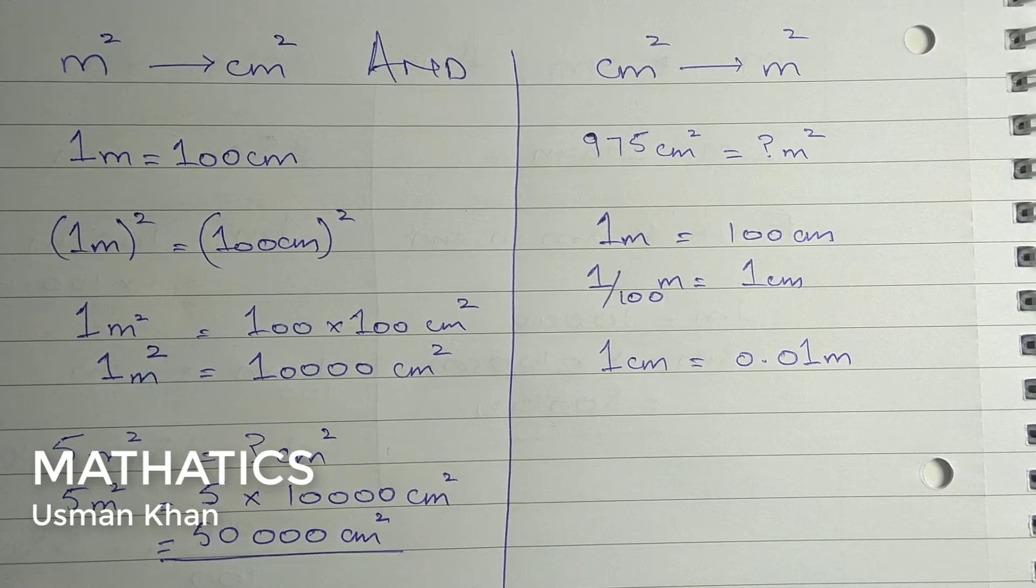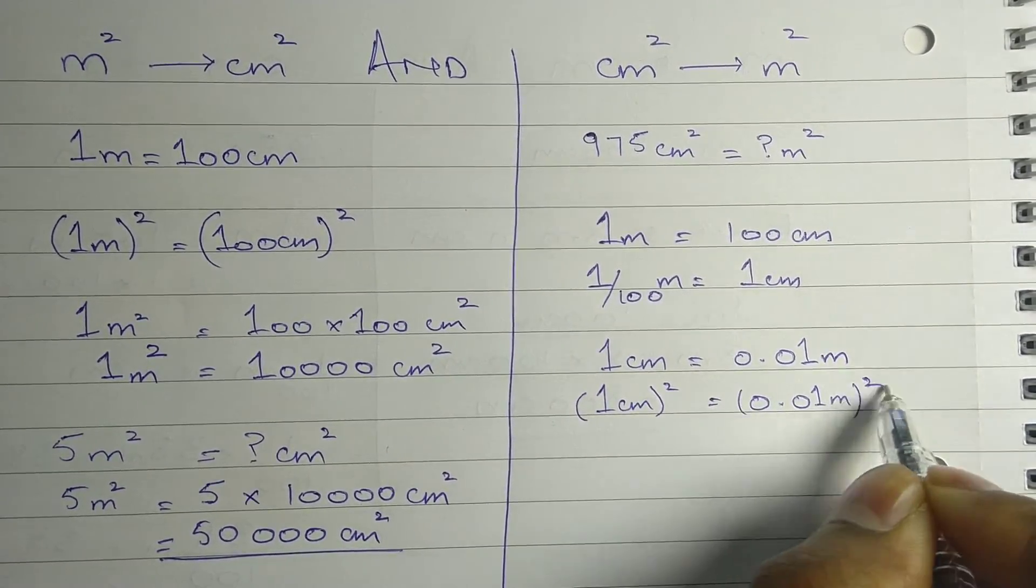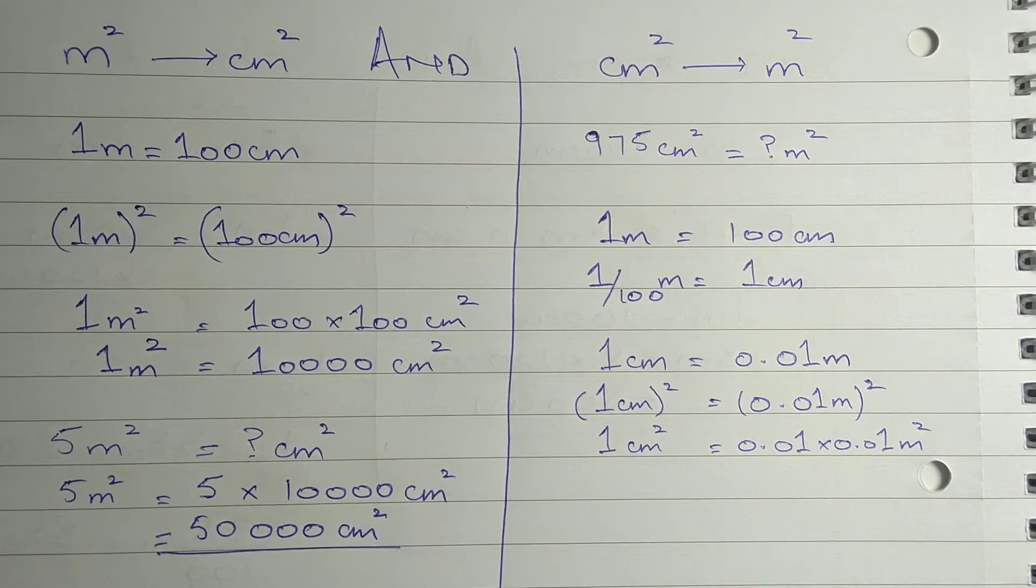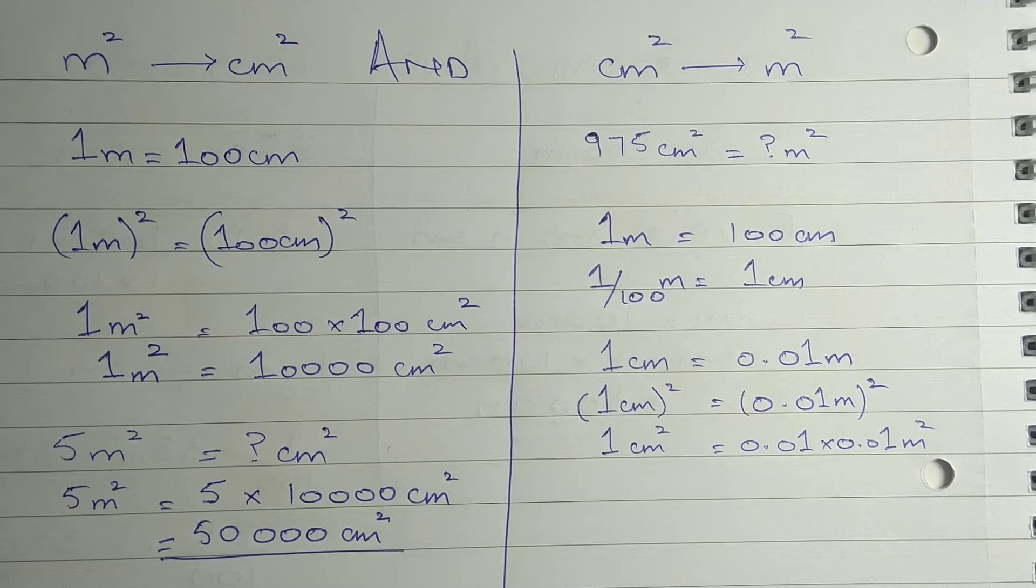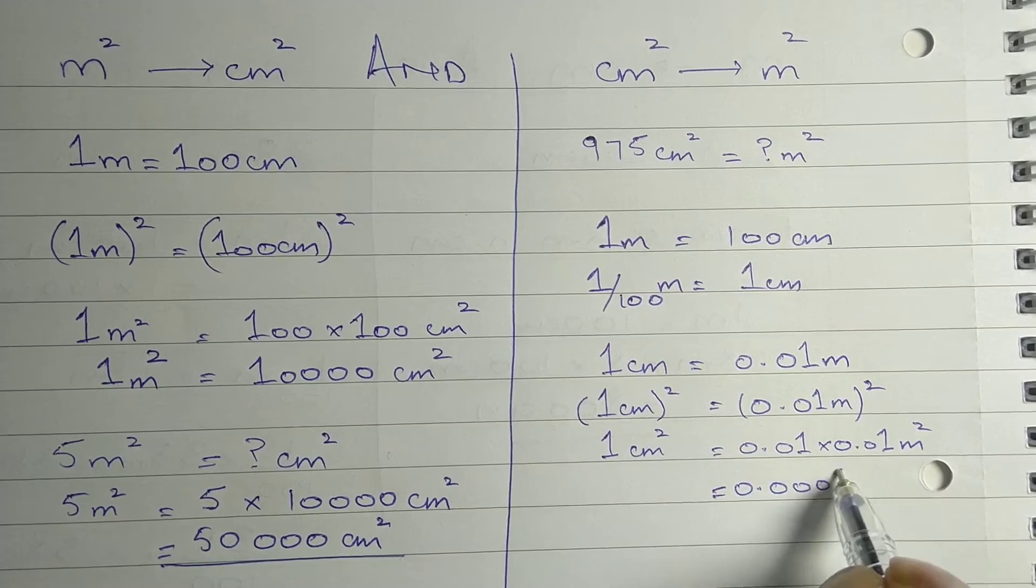Now to find the square relation of centimeter and meter we'll square them on both sides. 1 squared is 1. 0.01 squared is 0.01 multiplied by 0.01, that gives us 0.0001.